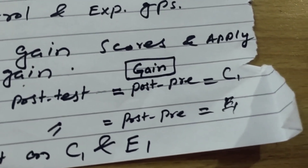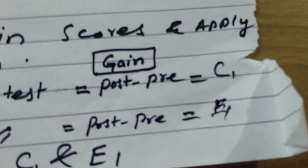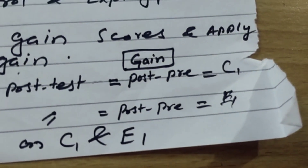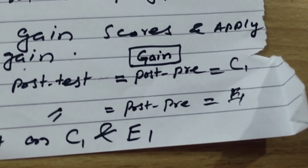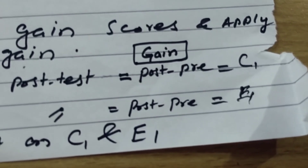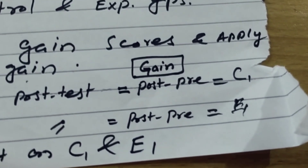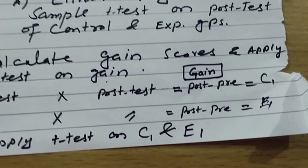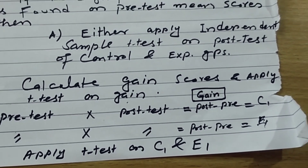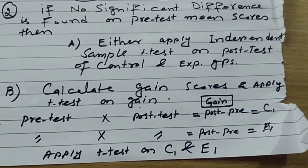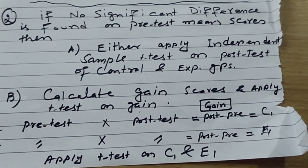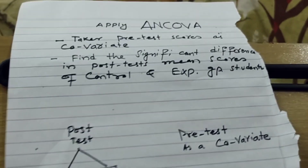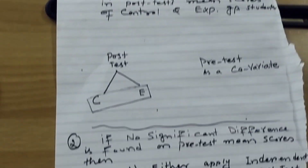To calculate the gain score for the control group, subtract the pre-test scores from the post-test scores to get a gain score column. Similarly, the experimental group gain scores are calculated by subtracting pre-test scores from post-test scores. Then apply an independent t-test on these two sets of gain scores to determine which method is more effective. If you have any questions, place them in the comment box. Allah Hafiz.